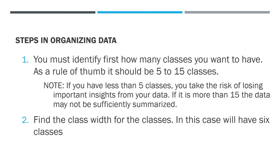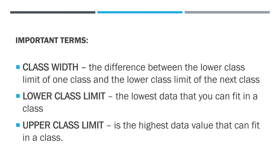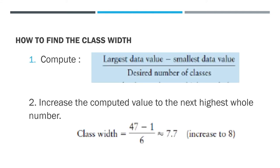It's up to you to decide. Next, find the class width. In this case, we'll have 6 classes. The class width is the difference between the lower class limit of one class and the lower class limit of the next class. Think of it as the distance between containers of information. The lower class limit is the lowest data that can fit in a class, and the upper class limit is the highest data value.